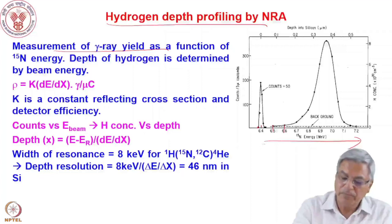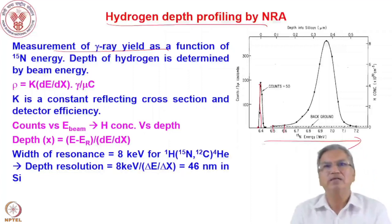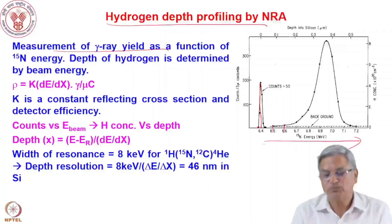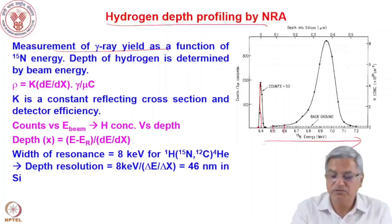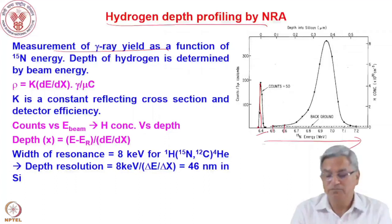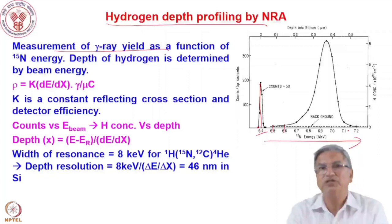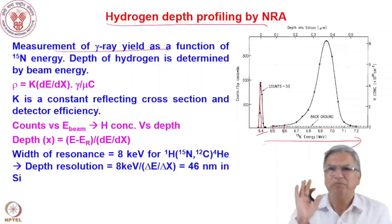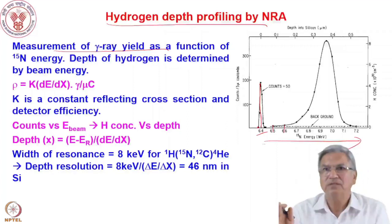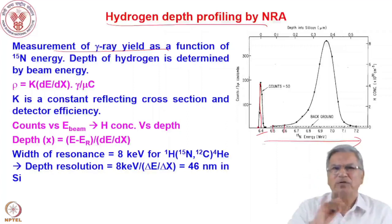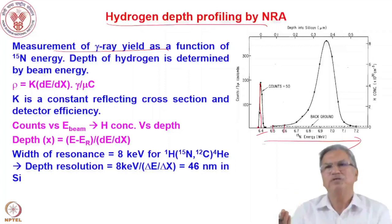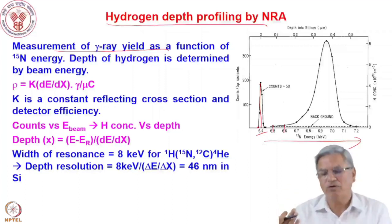In the spectrum, the gamma-ray yield at 6.4 MeV corresponds to the surface hydrogen, since that is the initial resonance condition. As beam energy increases, you probe the bulk hydrogen. In this demonstration, hydrogen was implanted in a sample at a particular energy, showing depth profiling of hydrogen.